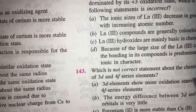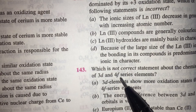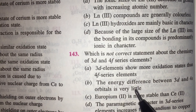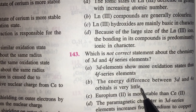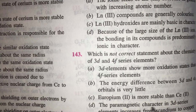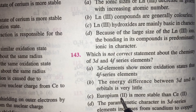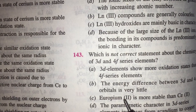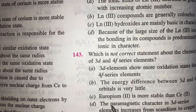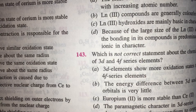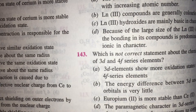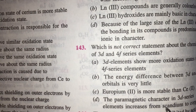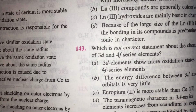Which is not the correct statement about the chemistry of 3D and 4F series elements? 3D elements show more oxidation states than 4F series — absolutely true. The energy difference between 3D and 4F orbitals is very little — true. Europium(II) is more stable than Ce(II) because Europium(II) has half-filled orbitals — true. The paramagnetic character of 3D series elements increases from scandium to copper — not necessarily true. For di-positive ions, it increases up to manganese with a variation at chromium. Chromium has maximum paramagnetism. Therefore, statement D is wrong.